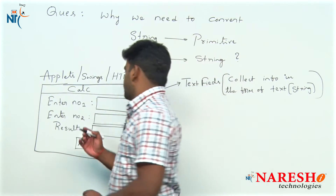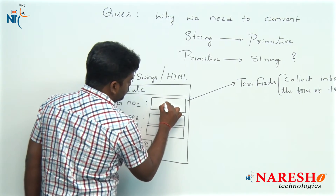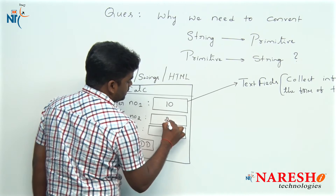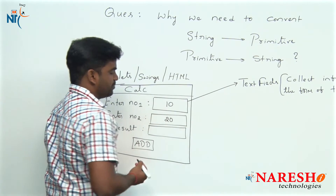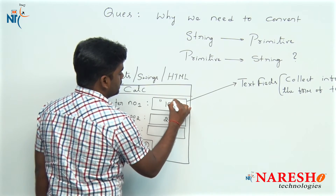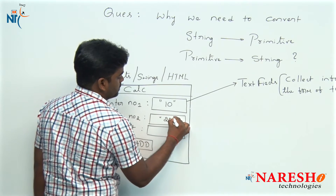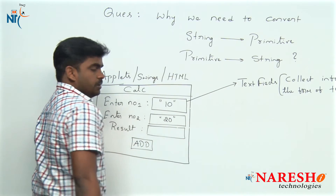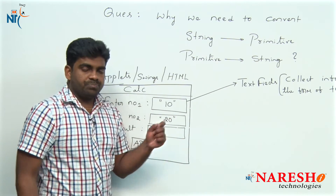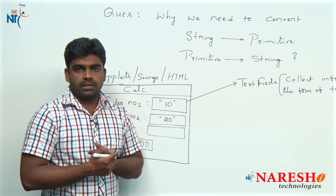Suppose we are giving input numbers 10 and 20 — internally they will be converted into strings. Internally, double quotes will be present. You cannot see the double quotes of course, but internally they are in the form of a string.